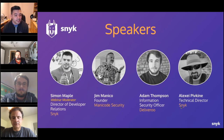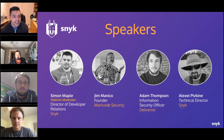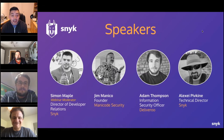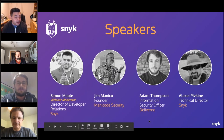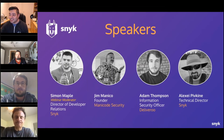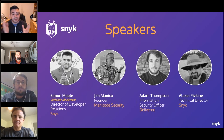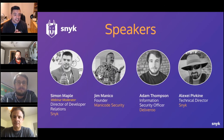My name is Simon Maple. I work at Snyk running the developer relations team — been here just over 18 months. My background is as a developer for almost 20 years, mostly Java; I'm a Java Champion. I'll be the host and moderator today. Kicking things off is Jim Manico, founder of Manicode Security — an amazing trainer in the security space and also a Java Champion and JavaOne Rockstar.